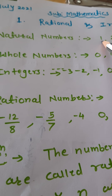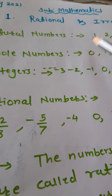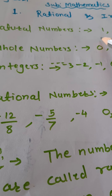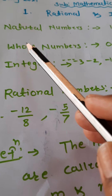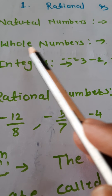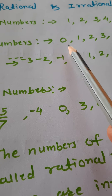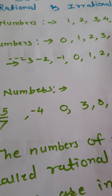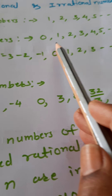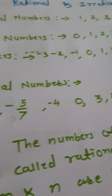Sometimes we don't have anything with us. That time we need 0. So, if we add 0 to the natural numbers group, a new group of numbers will form — that is whole numbers. The numbers present in this group are: 0, 1, 2, 3, 4, 5, 6 and so on.